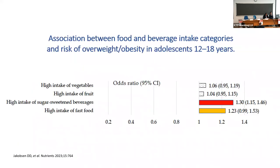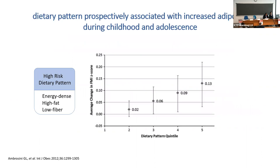If you look at nutrition, both epidemiological and nutritional data demonstrate an association between food and beverage intake and the risk of overweight and obesity in adolescence. In particular, high intake of sugar-sweetened beverages and high intake of fast food are associated with this risk. It was also clearly demonstrated that an energy-dense diet — high fat, low fiber — is directly associated with fatness in children and adolescents.